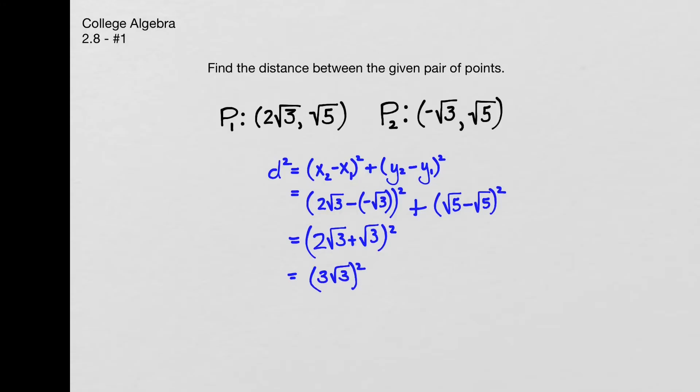So if we square that, and we distribute that square, so it's 3 squared times the square root of 3 squared, which turns into 9 times 3, which is 27.